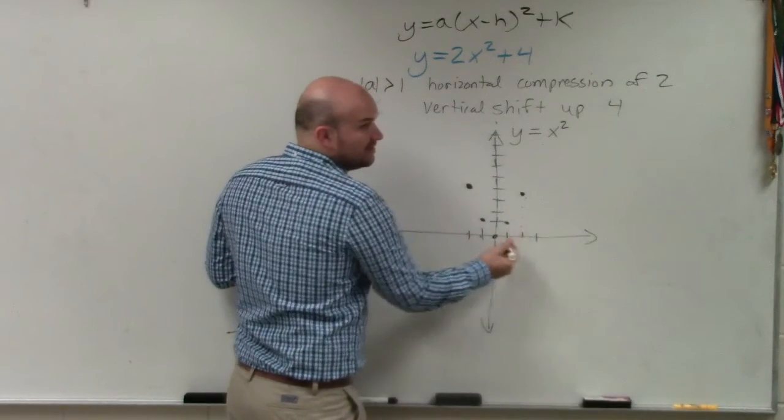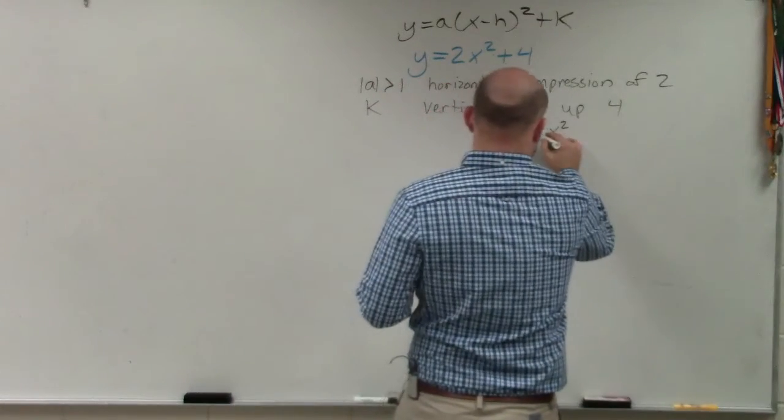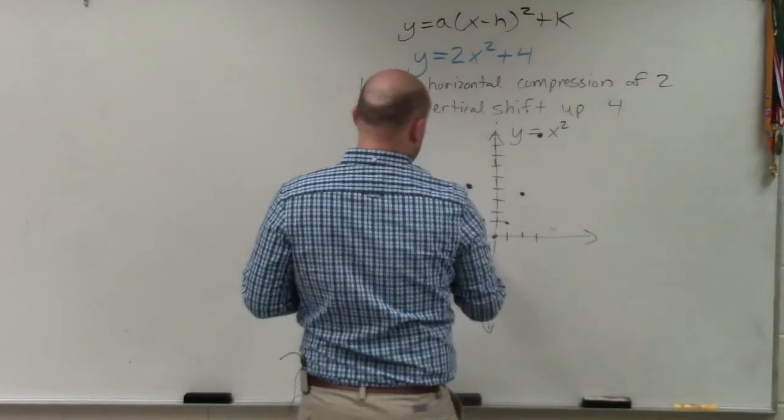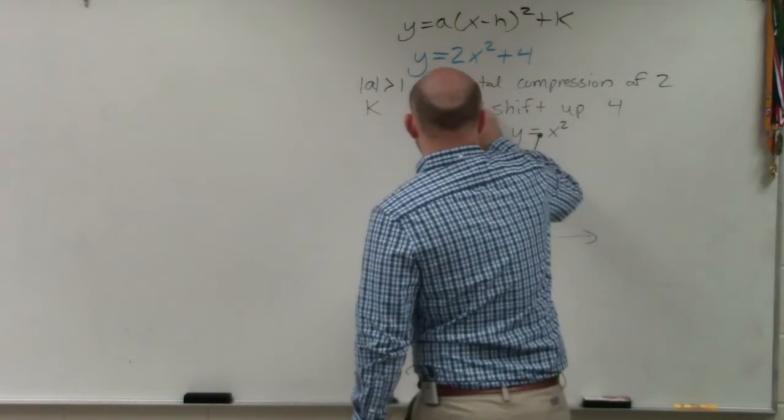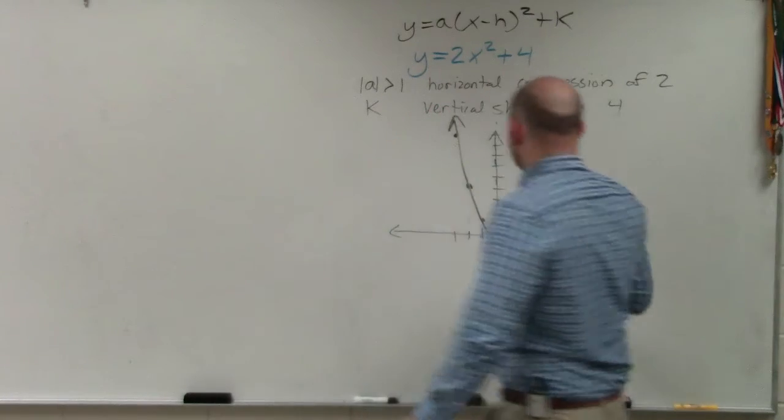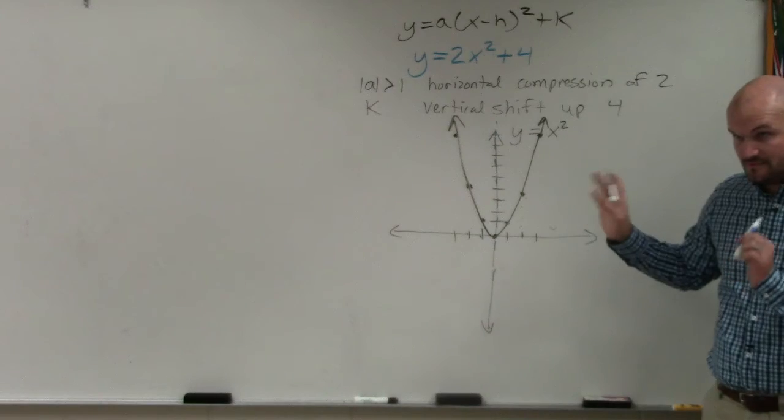If you were to plug in 3, you would get 3 squared is 9, right? And then you could reflect that point over, and you could say it's over there as well. That's with x squared. That's what we call our parent graph.